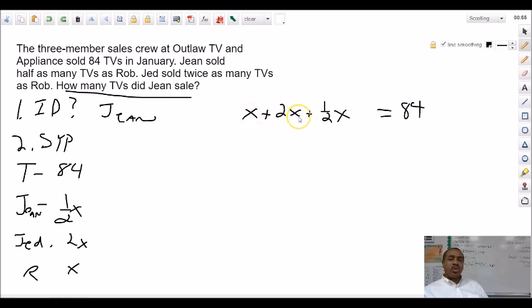X plus 2X is 3X, plus a half X is 3 and a half X equals 84.